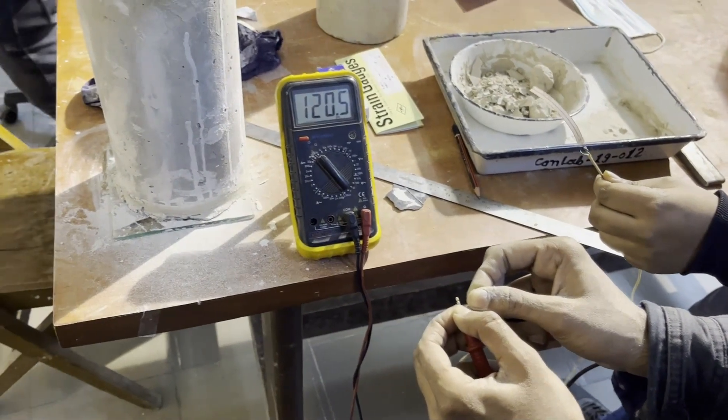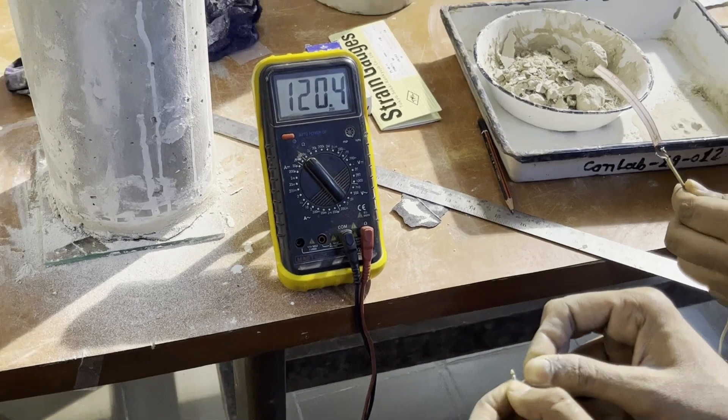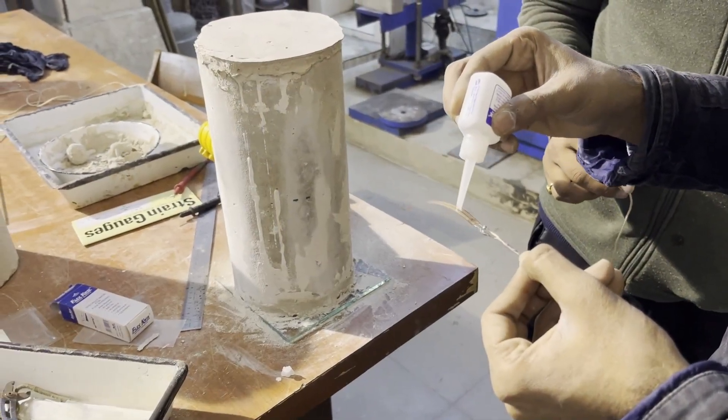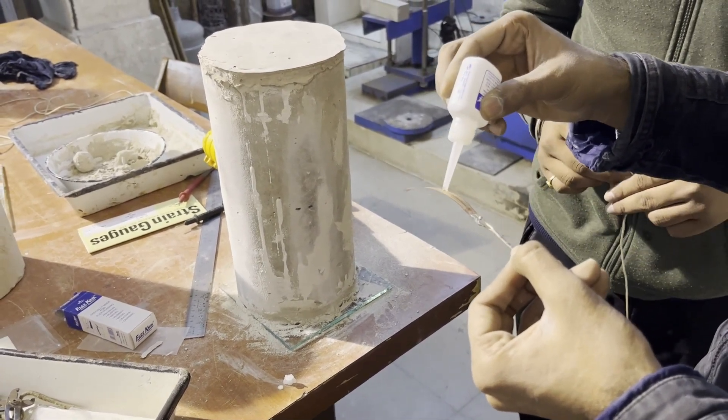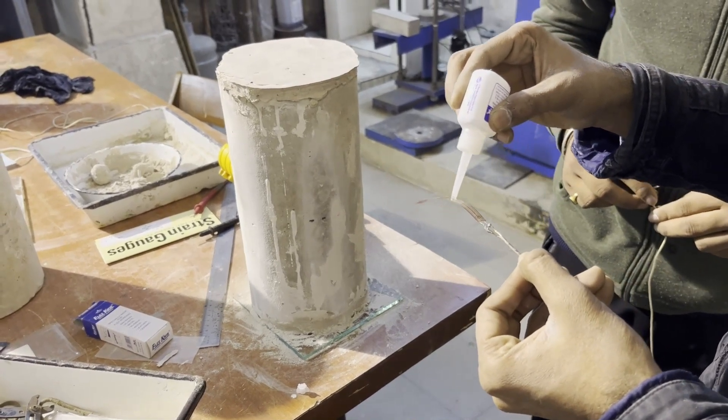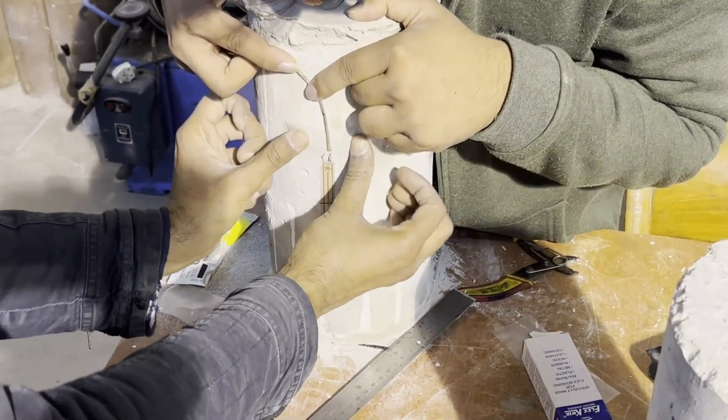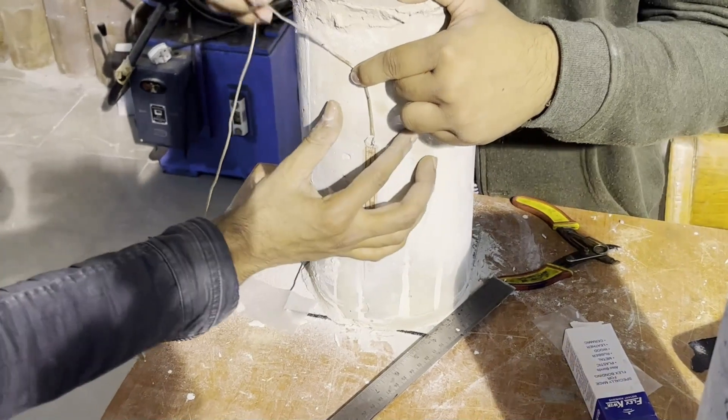Before using the strain gauge for measurements, test it to make sure it is functioning properly using a multimeter. Use a small amount of adhesive to apply to the center of the strain gauge. Be careful not to apply too much adhesive, as this can affect the sensitivity of the gauge. Carefully position the strain gauge onto the surface so that it aligns with the axis of deformation.